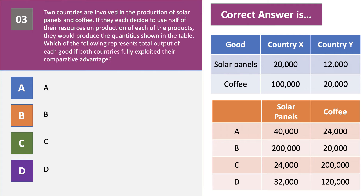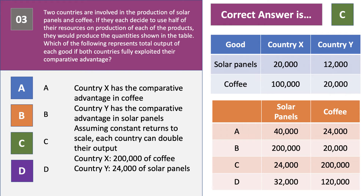The key is to work out which country has a relative comparative advantage in each product, given that they're going to fully specialise. The correct answer is C. Country X has the absolute advantage — it can produce more solar panels and more coffee. But country X has the comparative advantage in coffee; it's five times as good as country Y, and it's not even close to being five times as good in solar panels. So X has the advantage in coffee and Y has the comparative advantage in solar panels. Assuming constant returns to scale, each country can double its initial output. Country X doubles up to 200,000 units of coffee; country Y doubles up to 24,000 solar panels. The right answer is C.